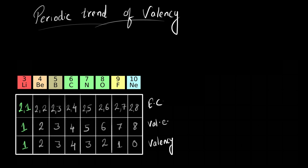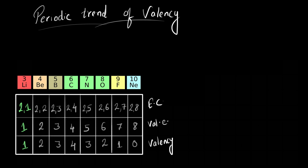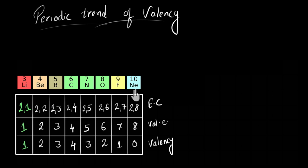I've already calculated the valency of every element and written it down — you can pause the video and compare your answers. Beryllium and boron respectively have two and three valence electrons, and it'll be easier for them to lose these electrons and attain the noble gas configuration like helium. So their valencies are two and three respectively. Carbon has four valence electrons; it will share these electrons and get a complete octet, just like the configuration of neon — so its valency is four. Nitrogen has five valence electrons; it will be easier for nitrogen to gain three electrons and get a complete octet, just like the noble gas neon, rather than losing five electrons. So its valency is going to be three.